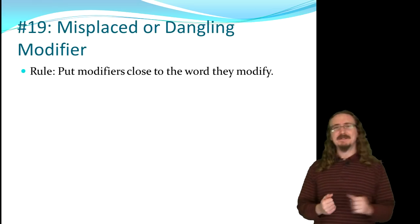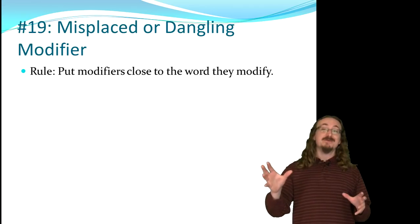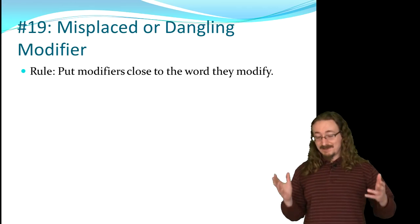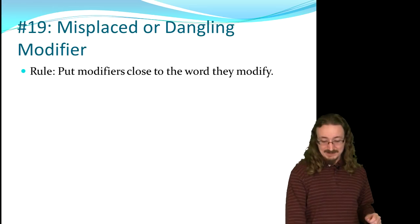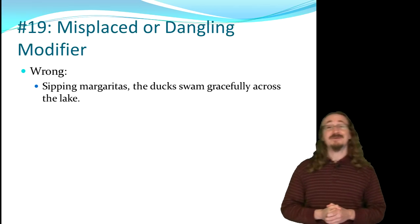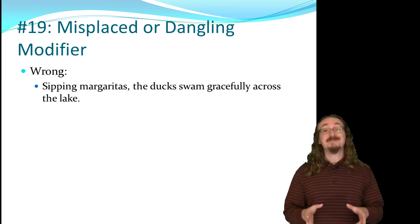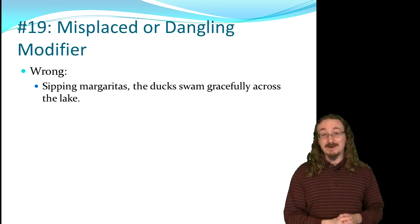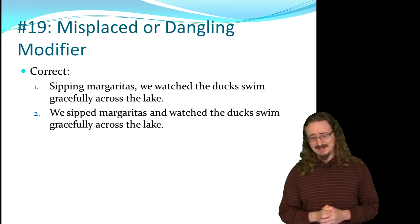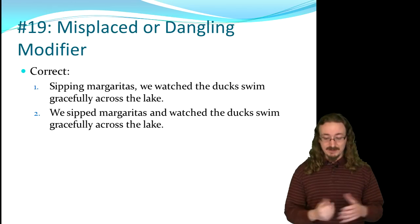Number 19: the misplaced or dangling modifier. Whatever your modifying element is, put it next to the word it modifies, and make sure that word is actually in the sentence. If it's missing entirely, that's a dangling modifier; if it's just in the wrong place, it's misplaced. Example: 'Sipping margaritas, the ducks swam gracefully across the lake' — the ducks aren't sipping margaritas! Fix it: 'Sipping margaritas, we watched the ducks swim gracefully across the lake,' or rewrite as 'We sipped margaritas and watched the ducks swim gracefully across the lake.'